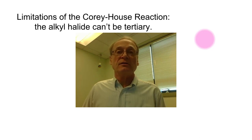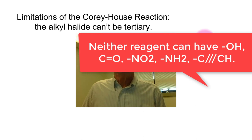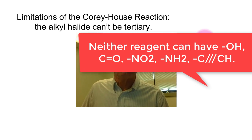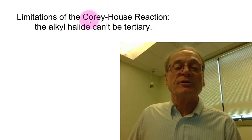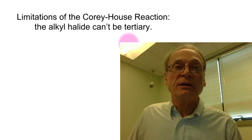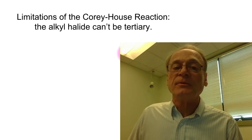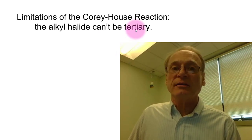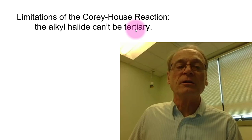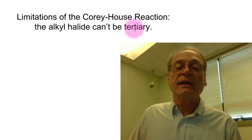There are some limitations to the Corey-House reaction. Because the Gilman reagent is organometallic, you can't have hydroxy groups, alcohols, aldehydes, ketones, nitro groups, amino groups, or terminal alkynes — a triple bond with a hydrogen on the end. These limitations are typical for all organometallic compounds. Additionally, for the Corey-House reaction, the alkyl halide itself cannot be tertiary, because the Gilman reagent as a strong base would eliminate rather than substitute, giving the wrong product.